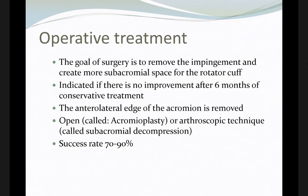For operative treatment, the goal of surgery is to remove the impingement by widening the subacromion space so the rotator cuff muscles can pass through without problems. This is called subacromion decompression, which increases the space for the rotator cuff. The indication is usually when conservative treatment fails for more than six months. Acromioplasty can be done arthroscopically and has a high success rate.